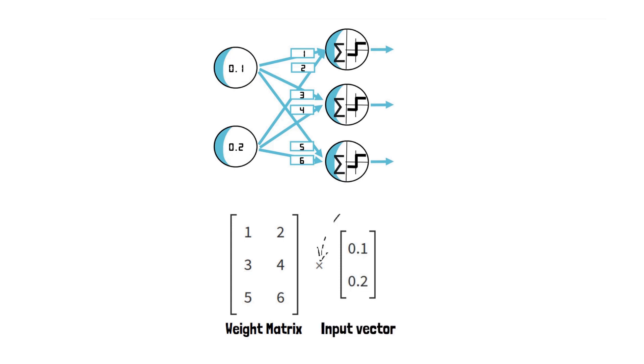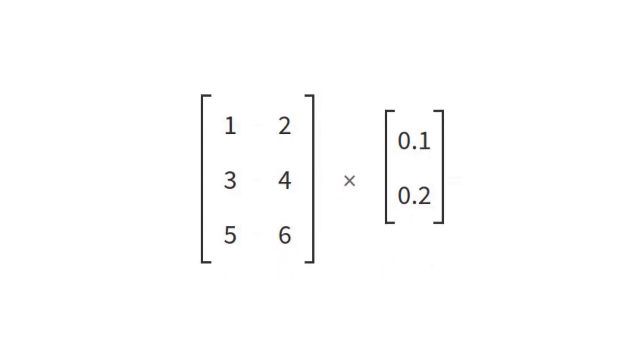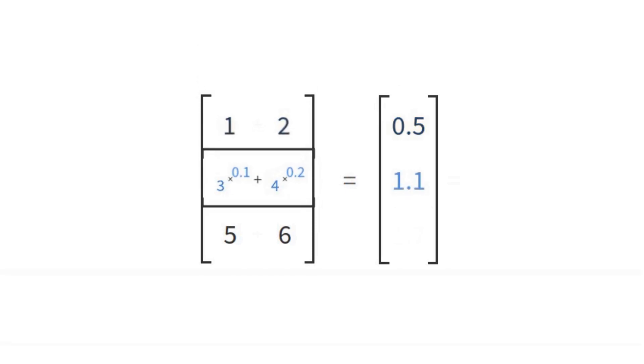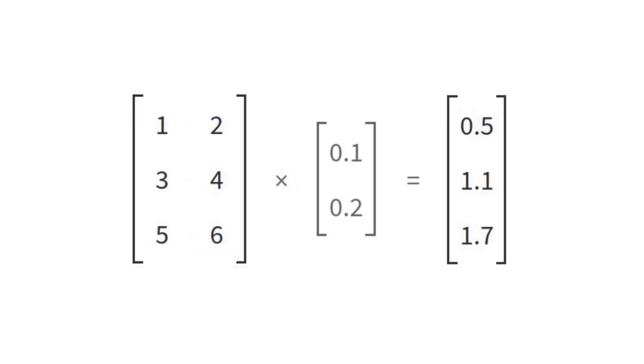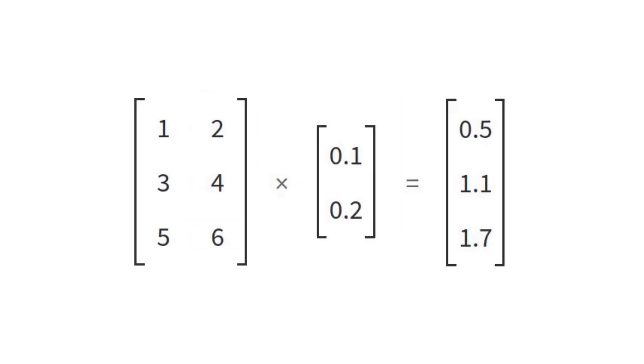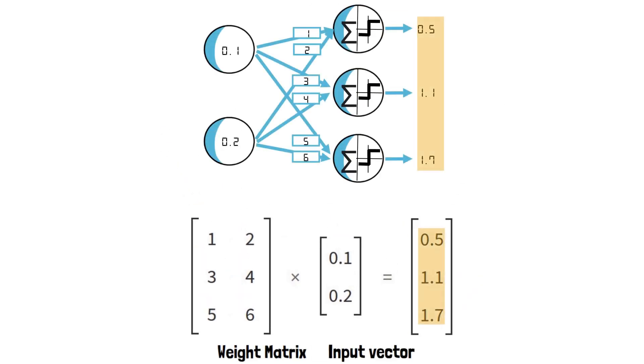You might recall the matrix multiplication operation you learned in your algebra classes. It turns out that when you perform a row by column multiplication between this weight matrix and the input vector, you end up calculating the weighted sum for each neuron in that layer, all in one go.